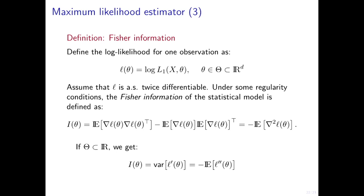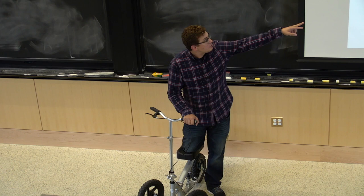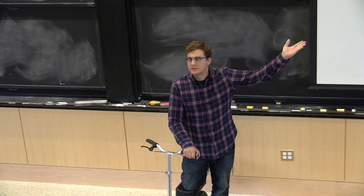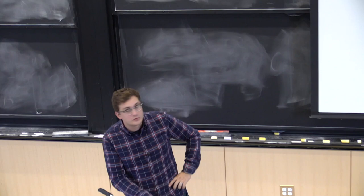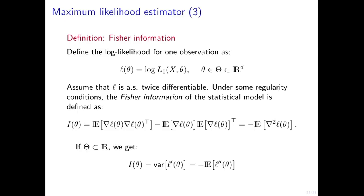You can see that because it's the outer product — it's of the form gradient times gradient transpose. If the gradient is d-dimensional, then gradient times gradient transpose is a d by d matrix. This matrix tells you how much information about theta is in your model.